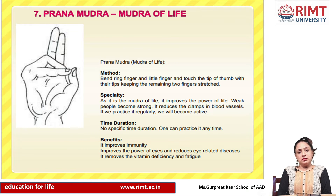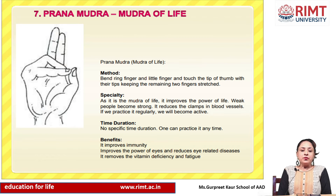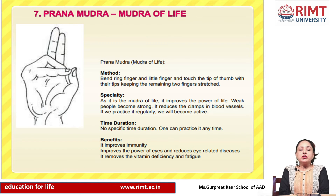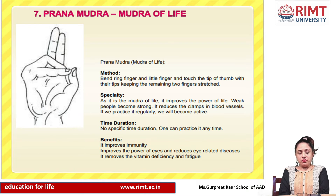Next is Prana Mudra, also called the Mudra of Life. Method: bend the ring finger and little finger and touch the tip of the thumb with their tips, keeping the remaining two fingers stretched. Specialty: as it is the Mudra of Life, it improves the power of life. Weak people become strong, and it reduces clamps in blood vessels. If practiced regularly, we become active. Time duration: no specific time duration — one can practice it any time. Benefits: it improves immunity, improves the power of the eyes and reduces eye-related diseases, and removes vitamin deficiency and fatigue.